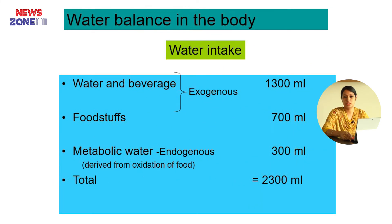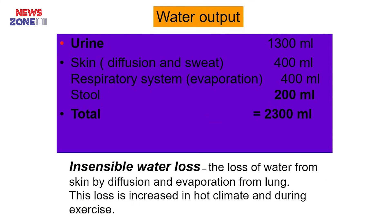Water balance of the body. Water intake: we intake around 2300 ml of water daily — water and beverages 1300 ml, food stuff 700 ml, and metabolic water derived from the oxidation of food 300 ml, totaling 2300 ml. Insensible water loss is the loss of water from skin by diffusion and evaporation from the lungs. This loss is increased in hot climates and during exercise.